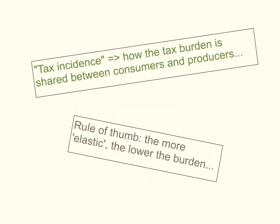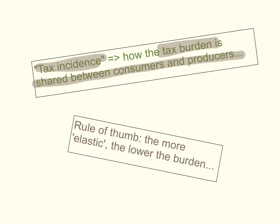Let's start by defining tax incidence. Tax incidence refers to how the tax burden is shared between consumers and producers. So when the government imposes an indirect tax on a good or a service, how is that tax burden shared between consumers and producers?